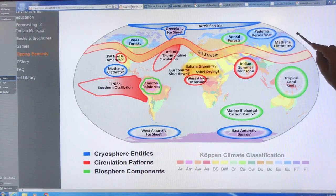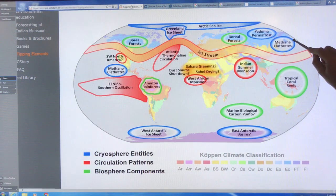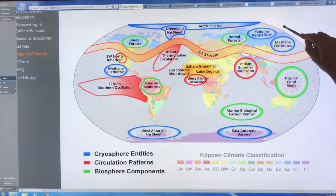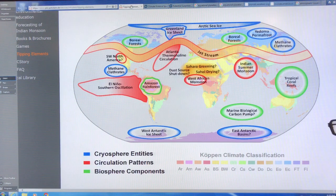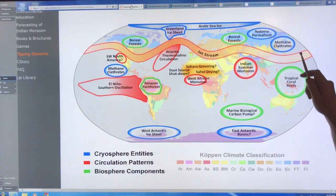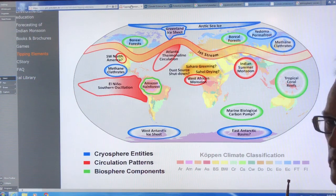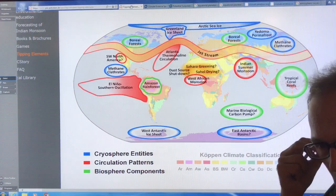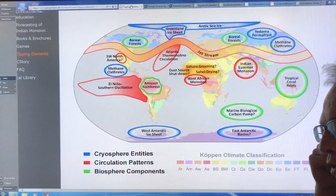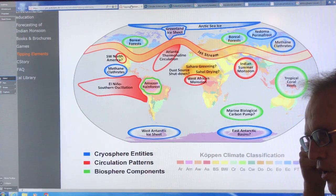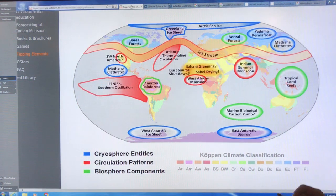There's also the methane clathrates in the Arctic. And there's also primarily on the Eastern Siberian Arctic shelf, basically on continental shelf surrounding the Arctic. So as the ocean water is warming, these methane clathrates that are in the sediments under the seafloor can be exposed to large amounts of heating and release.